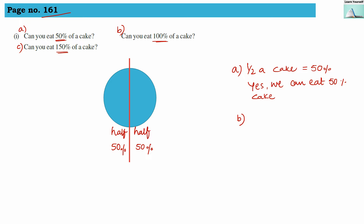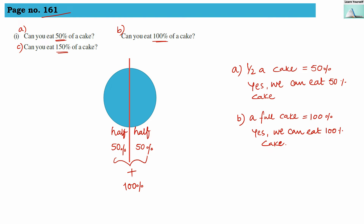For question b, can you eat 100% of a cake? When you add these two halves together it is 100%. When you are eating a full cake, that means you ate 100% of the cake. Whatever quantity there is, when you finish the whole quantity, that means you are eating 100% of it. So yes, we can eat 100% of a cake.